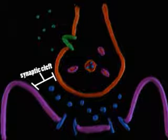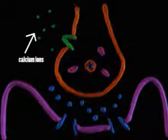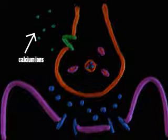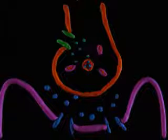Sodium ions between the muscle cell fiber and the synaptic membrane will soon depolarize the muscle cell. But first, calcium ions outside the axon terminal must enter it. An action potential arrives at the presynaptic terminal, causing the calcium ion channel to open. Calcium ions then enter the terminal.